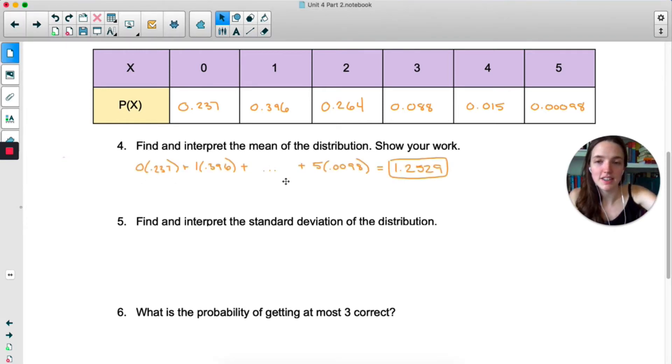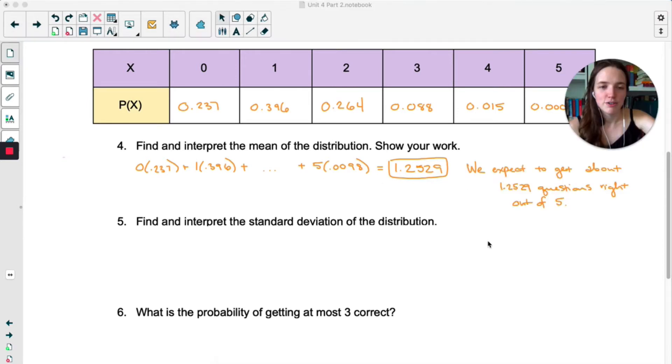All right, so here's our mean. I did this one by hand, just x times each probability and add them all up. So that means we can expect to get 1.2529 questions right out of 5.